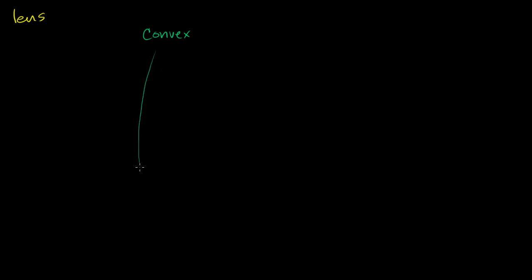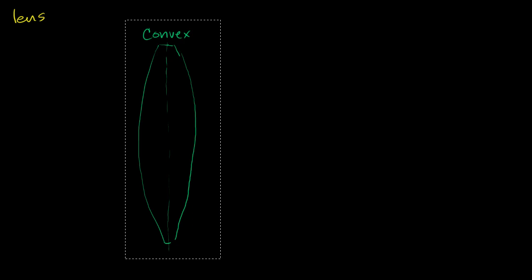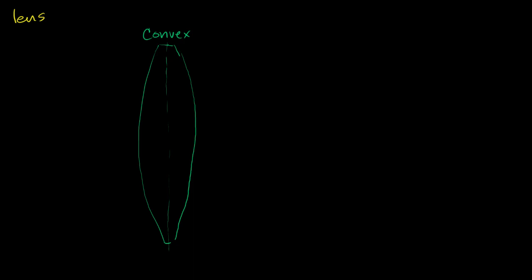So part of the surface of a sphere, and it's symmetric — it has some center right here. And then you have another surface of a sphere that's exactly the same, forming this convex lens. Now let's think about what's going to happen as light goes through this lens, as it's transmitted and refracted. We're assuming this is air out here and this is glass — something with a higher index of refraction, something in which light travels slower.